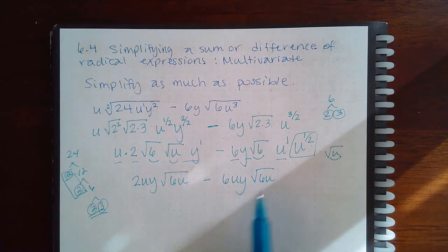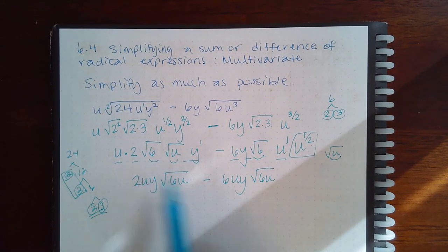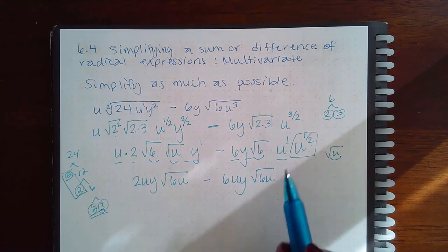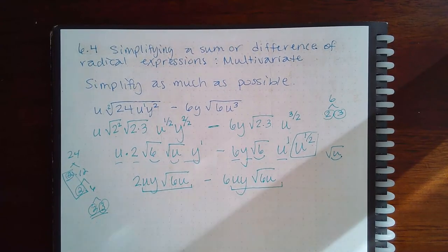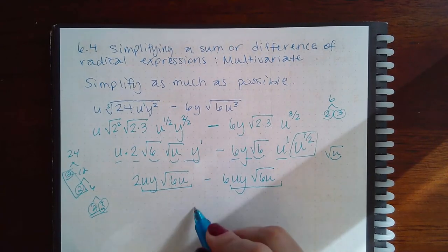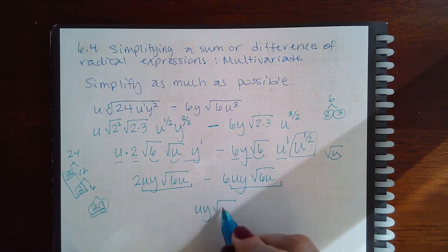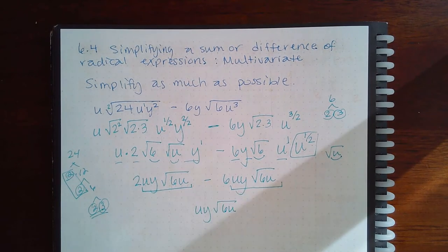Now notice that they both have the square root of 6u and they both have u to the first power and y to the first power, so these are like terms. This is the part that they have like - that's the like term part. So I know my answer is going to have all of that in it, I just need to figure out what the coefficient is going to be.